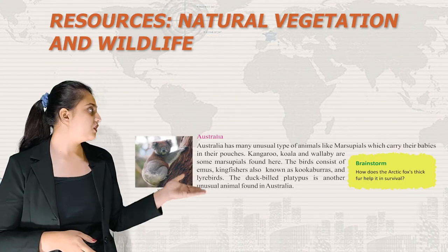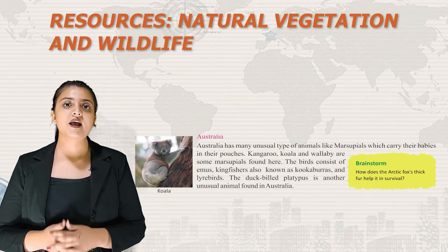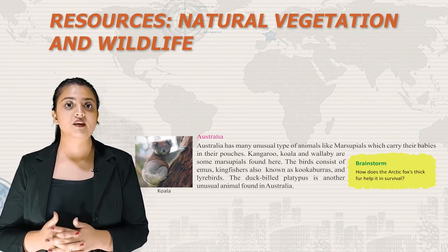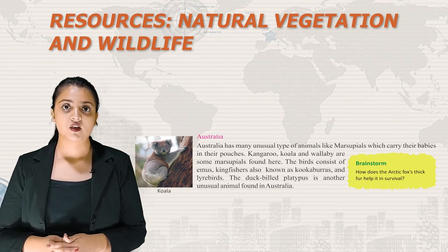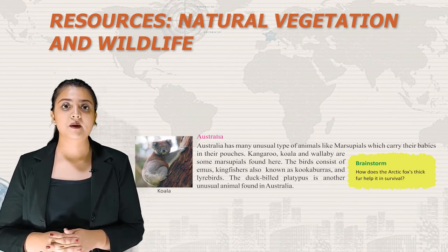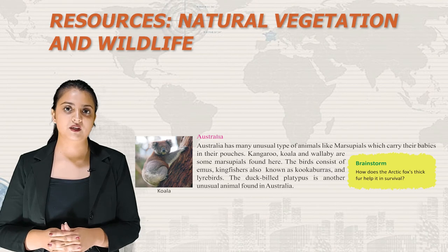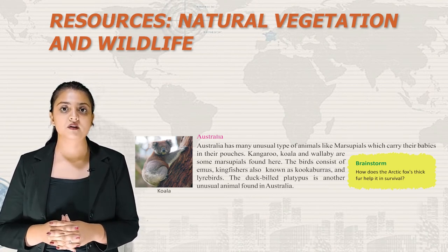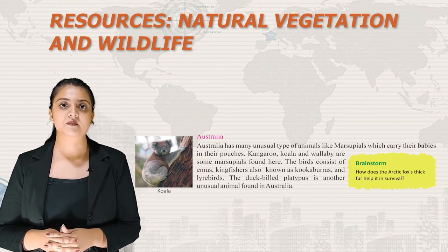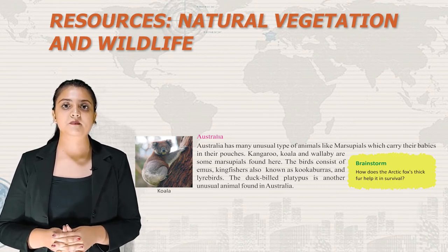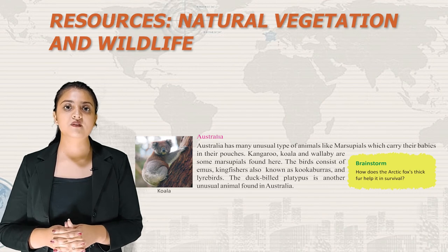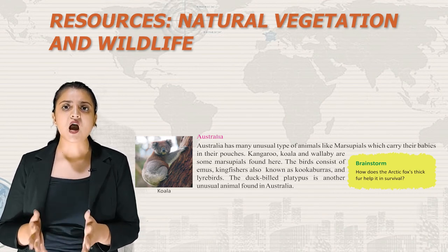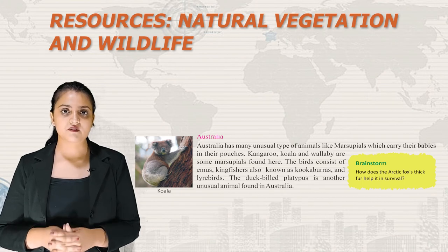Australia has many unusual types of animals, including marsupials which carry their babies in pouches. Kangaroo, koala and wallaby are some marsupials found here. The birds consist of emus, kingfishers (also known as kookaburras) and lyrebirds. The duck-billed platypus is another unusual animal found in Australia. Let's brainstorm: how does the arctic fox's thick fur help in its survival?